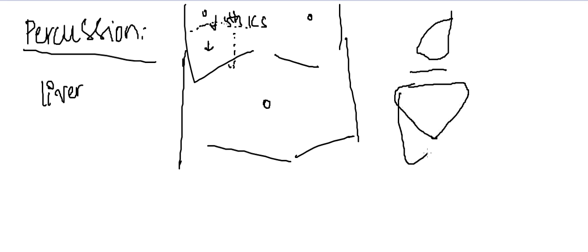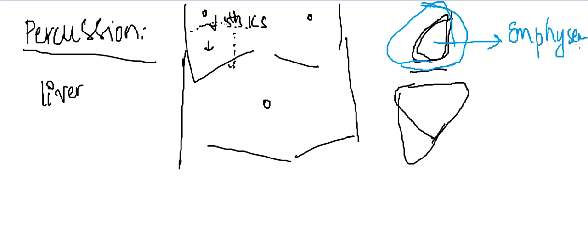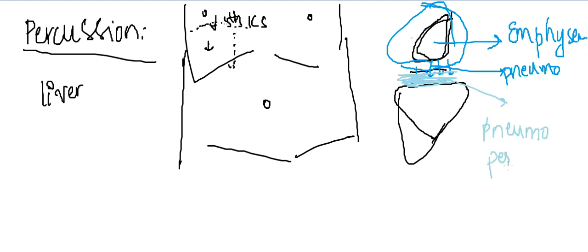Dullness can decrease in certain conditions. In emphysema, there is air trapping in the lung so the lung enlarges slightly. In pneumothorax, air in the pleural cavity pushes the diaphragm and liver downwards, decreasing dullness. Dullness also decreases when there is gas in the peritoneal cavity under the diaphragm — that is pneumoperitoneum.